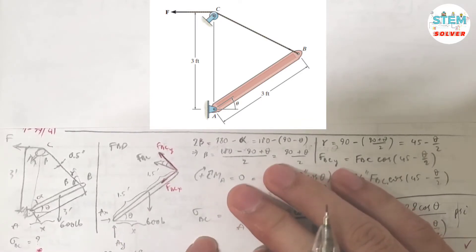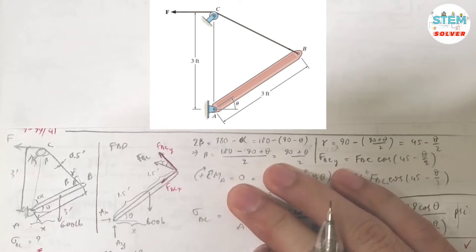Again, you are asked to find the normal stress in member BC. Look at my finger here, so normal stress in BC. The normal stress in the cable eventually.